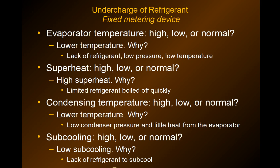For an undercharged fixed metering device system, the evaporator temperature will be lower than normal because too little refrigerant causes low pressure and low temperature. The superheat is going to be higher than normal because there's not enough refrigerant to boil off throughout the entire evaporator — it boils off quickly early on, and then picks up more superheat than normal.